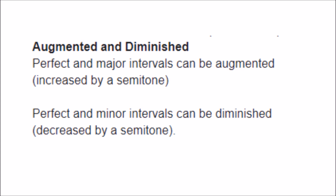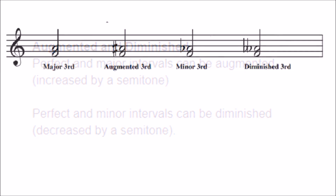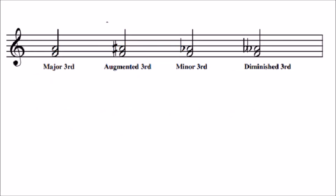Perfect and major intervals can be augmented — that means they are increased by a semitone. And perfect and minor intervals can be diminished — that is, they can be decreased by a semitone. Let's consider some examples.